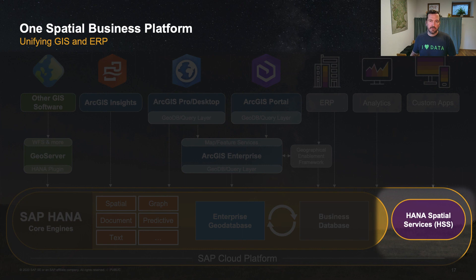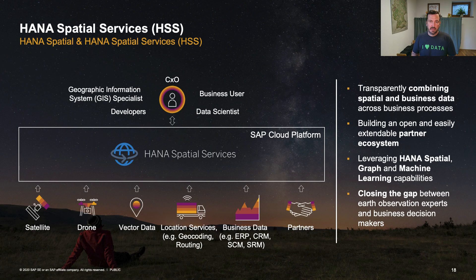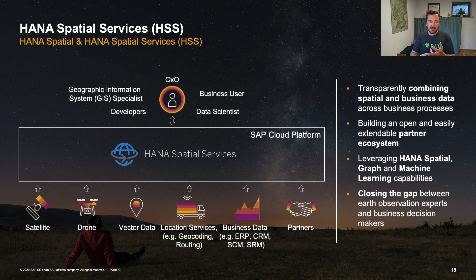If you want to incorporate third-party spatial data such as weather data, there is the cloud service HANA Spatial Services. It builds the bridge between third-party data and the SAP ecosystem, integrating for example drone imagery, satellite imagery, third-party vector data, and location services such as geocoding or routing with your business data. HANA Spatial Services works with partners like HERE or ESRI to license that data for you.